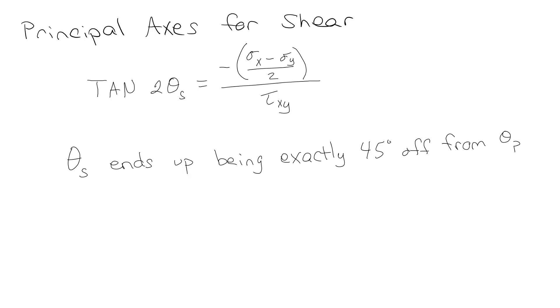So the principal axis for shear ends up being exactly 45 degrees off, so that means some of our pluses and our minuses kind of rotate. But the difference is, whenever we maxed out our normal stress, our tau went away, but the opposite isn't true. When we max out our shear stress, the normal stress does not go away.